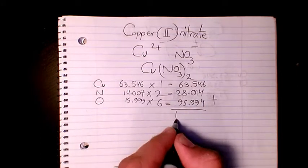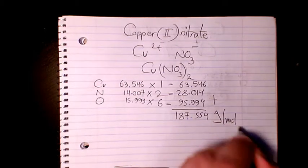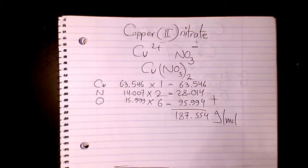When you add them it's going to be 187.554 grams per mole. That's the molar mass or molecular weight of copper(II) nitrate. I hope you enjoyed this video.